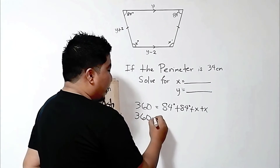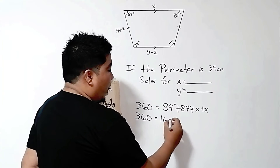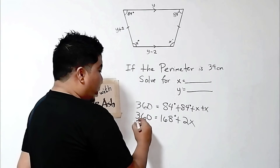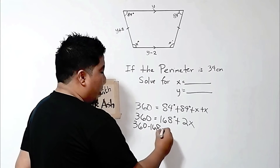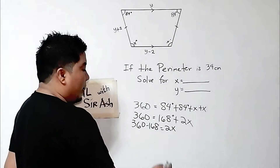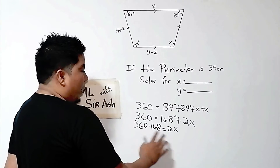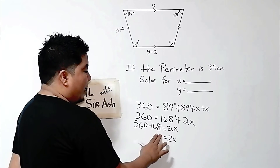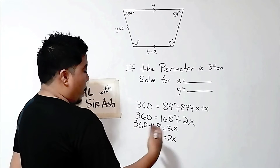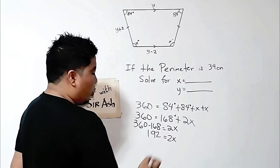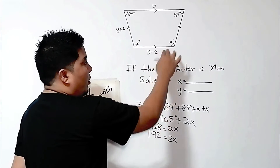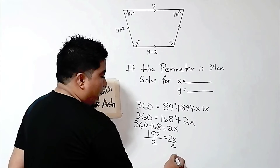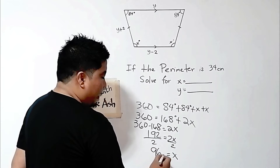Therefore, if you add the first 84 degrees plus the second 84 degrees plus two values of x, you will have: 360 equals 84 plus 84, which is 168, plus 2x. Transposing 168 to the other side gives 360 minus 168 equals 2x. Subtracting gives 192 degrees equals 2x. However, we just need one angle, so divide by 2, and x equals 96 degrees.